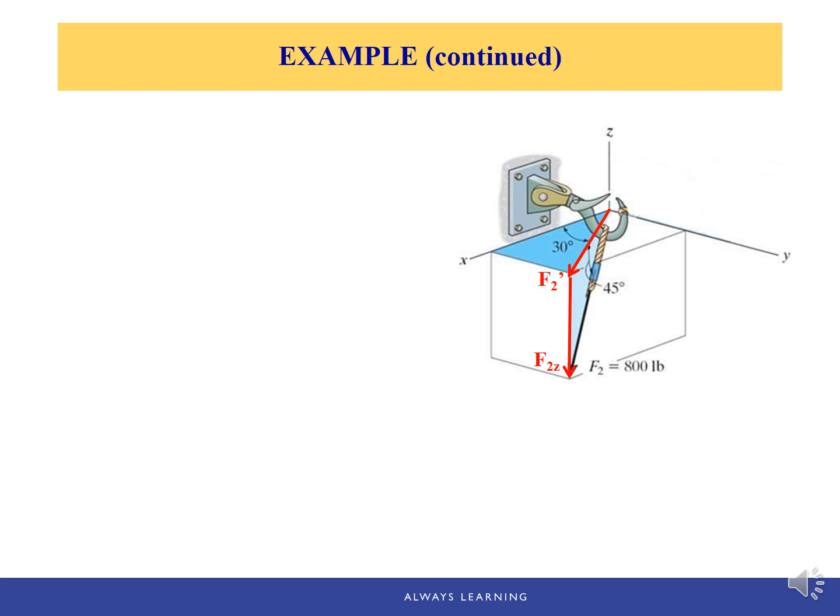To resolve F2, first identify the components on the figure. We apply the imaginary path method again. The starting point of F2 is at the origin and the head of F2 is at the endpoint. We travel from the origin to the head only along x, y, and z directions. Two triangles are already given — one in darker blue, one in lighter blue — representing planes, and we walk around the sides of each plane to find the components.